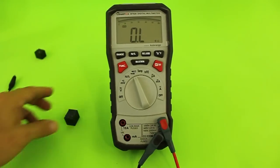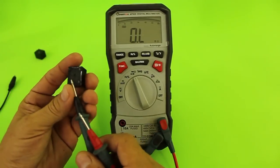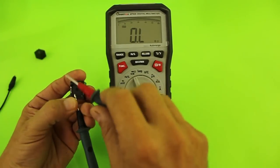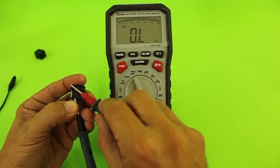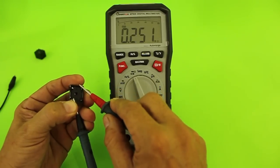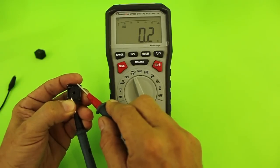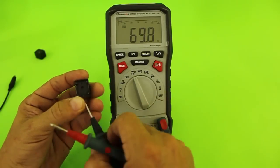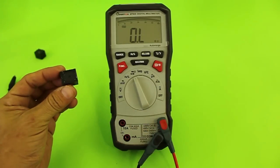Okay, let's check the continuity. This is the common contact and the normally open. We can see there is no continuity. And in the normally closed, we do have continuity. This is with the coil not energized.